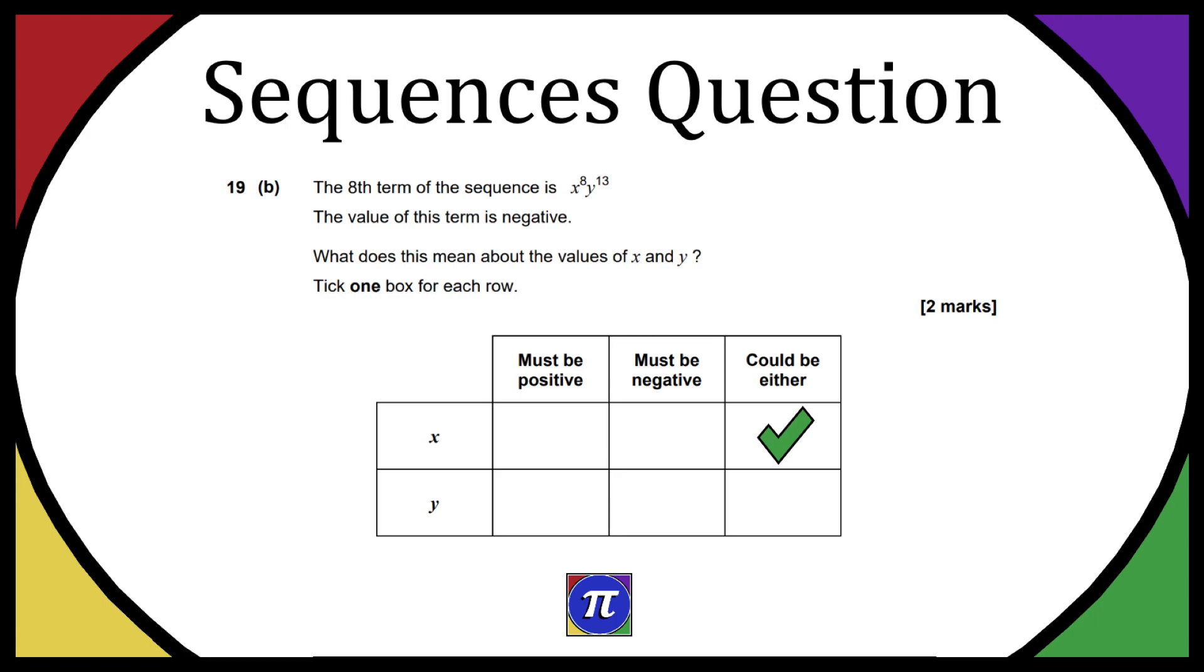Now on line two of the question it says the value of this term is negative. Well we know x to the power of 8 is going to be positive, so y to the power of 13 is going to have to be the negative part because we have a positive times a negative to make that negative final value. Now how do we make y to the power of 13 negative?